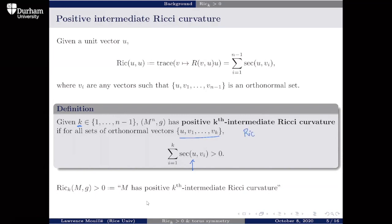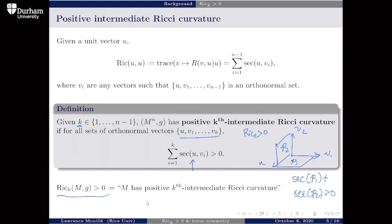Given K between 1 and n minus 1 (the dimension), positive K-th intermediate Ricci curvature (written Ric_K positive) means: for any set of orthonormal vectors U, V_1 up to V_K, the sum of sectional curvatures K(U,V_i) is positive. For example, Ric_2 positive requires three vectors U, V_1, V_2: the sectional curvature of the plane spanned by U and V_1 plus the sectional curvature of the plane spanned by U and V_2 must be positive. Sectional curvature is Gaussian curvature of the totally geodesic surface obtained by exponentiating a plane in the tangent space.